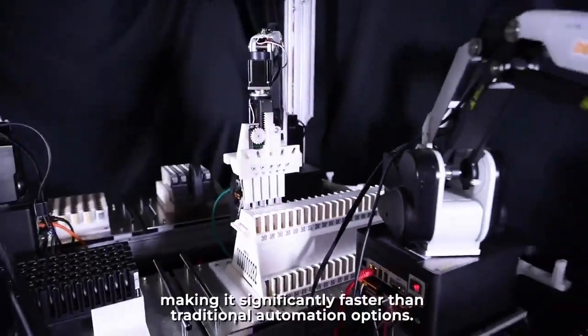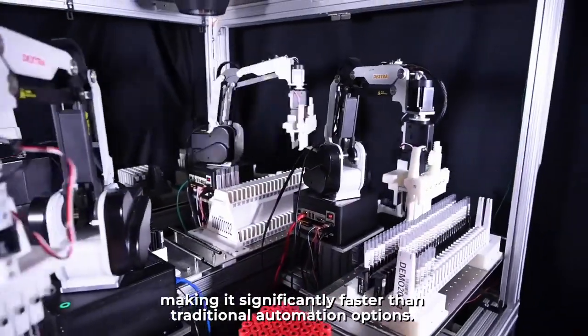The Dextra can handle 20 tubes at once, making it significantly faster than traditional automation options.